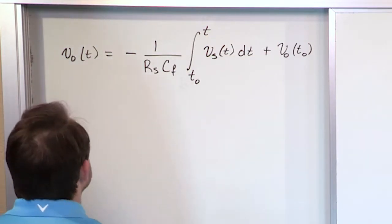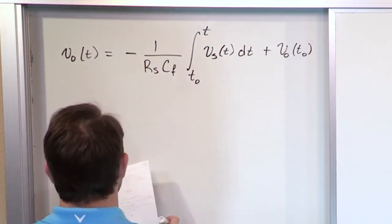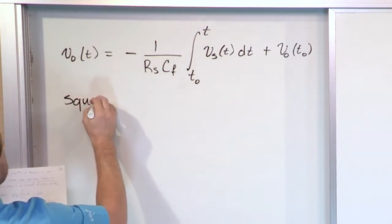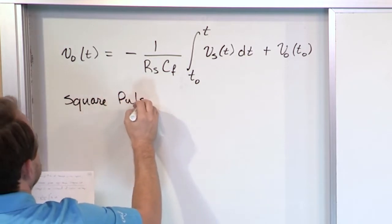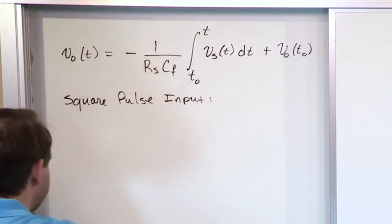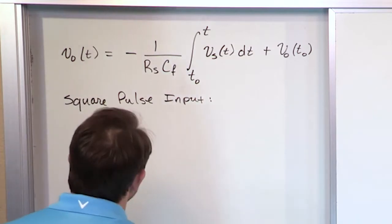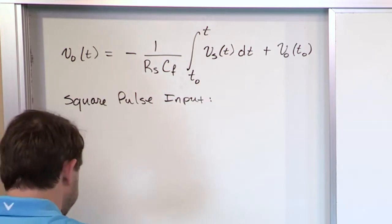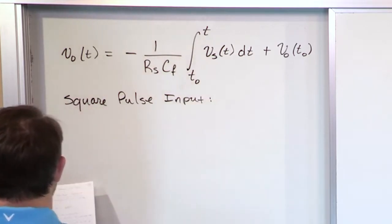Let's go ahead and do a square pulse input. And again, the input can be anything. We're just picking this because it's easy to understand. So what we're going to do... let me stay with black. I like black for the axis here.